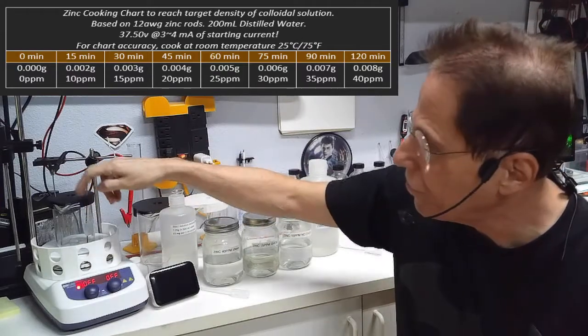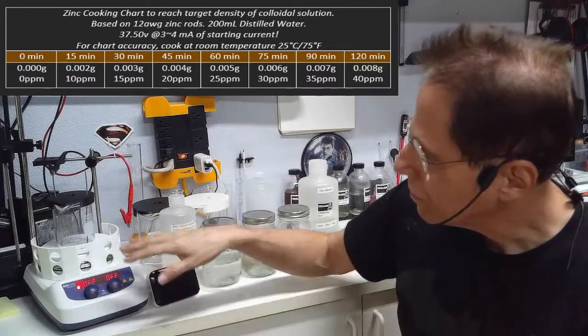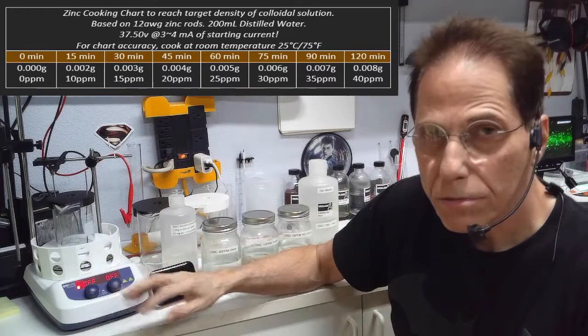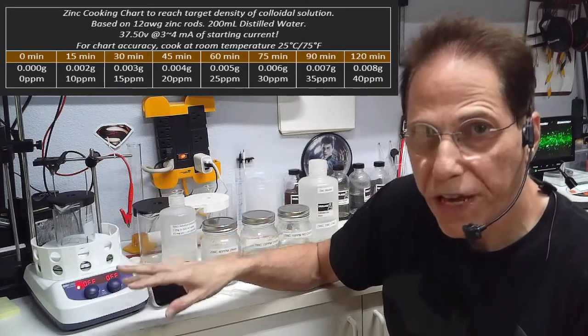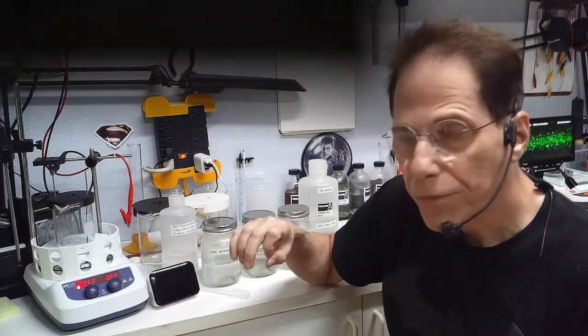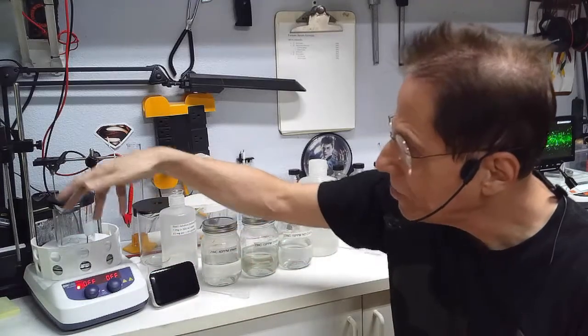Whatever time it says for 200 to cook to 15 or 20 parts per million, just double that if you've doubled the amount of liquid. Don't use any heat. I use heat because it makes it go faster, but if you don't have a heated stirrer and you can't measure the weight of the rods, you're not going to know how much zinc you have in the mix.